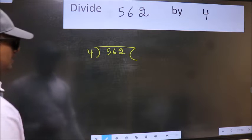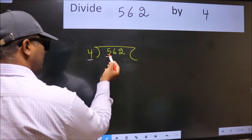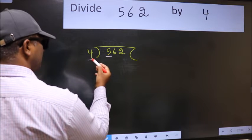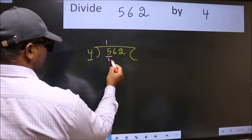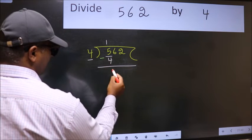Next. Here we have 5 and here 4. A number close to 5 in 4 table is 4 once 4. Now we should subtract. We get 1.